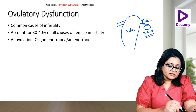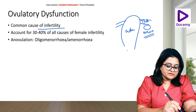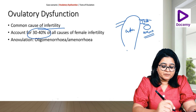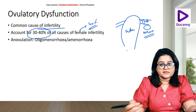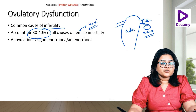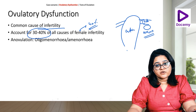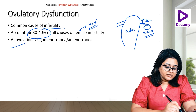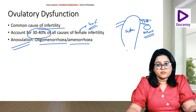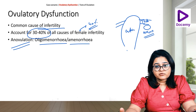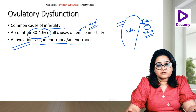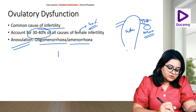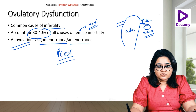Ovulatory dysfunction is a common cause of infertility. In fact, 30 to 40 percent of all cases of female infertility — and remember female infertility accounts for 40 percent of all cases of infertility — can be attributed to ovulatory dysfunction. Anovulation, that is oligomenorrhea or amenorrhea, is the common presentation, and one of the most common causes is polycystic ovarian syndrome.